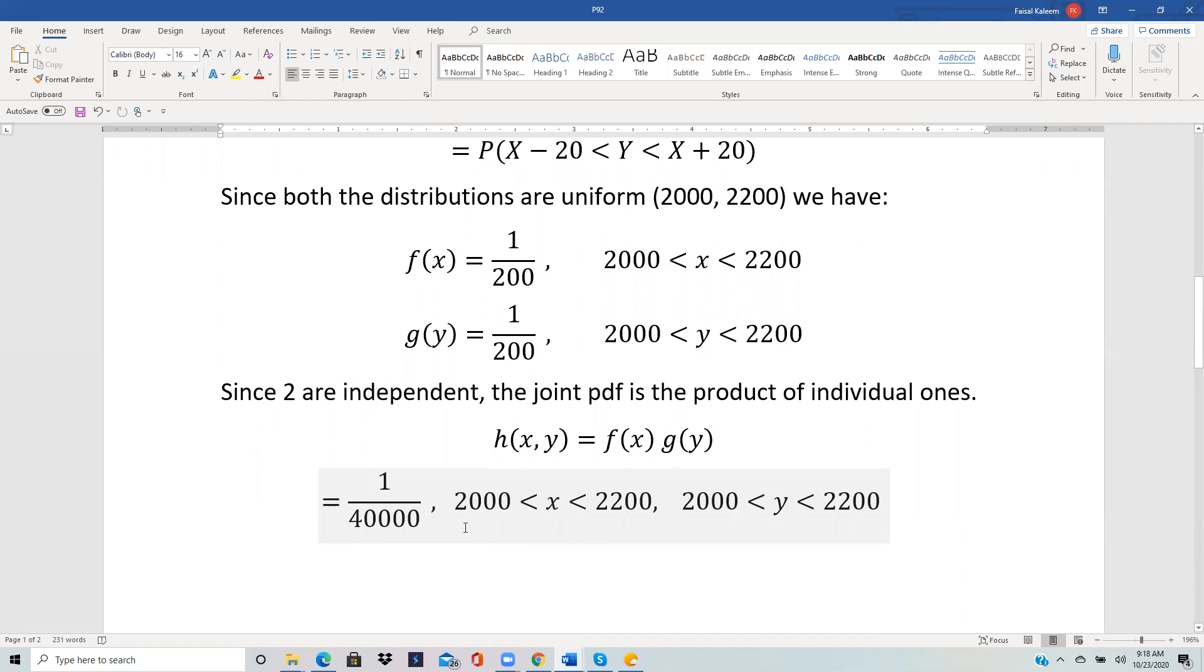The total area of the whole rectangle, X going from 2000 to 2200 and Y going from 2000 to 2200, is 40,000.